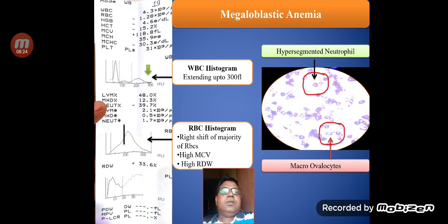In case number three, the WBC curve extends up to 300 femtolitres and the RBC curve is totally shifted to the right with high MCV and high RDW. On the peripheral smear of this patient there is a presence of hypersegmented neutrophils and macro-ovalocytes. We can easily appreciate that this is a typical case of megaloblastic anemia just by knowing the changes in these two histograms.